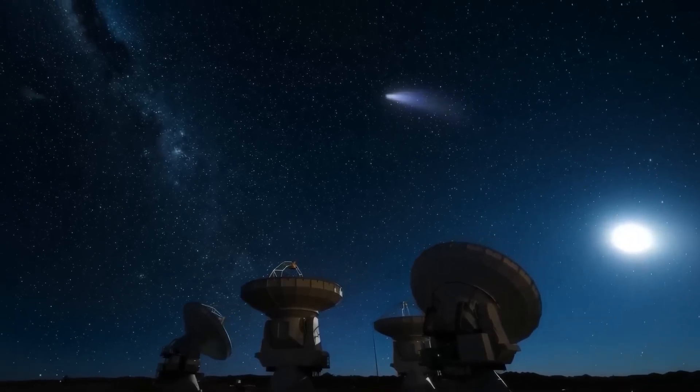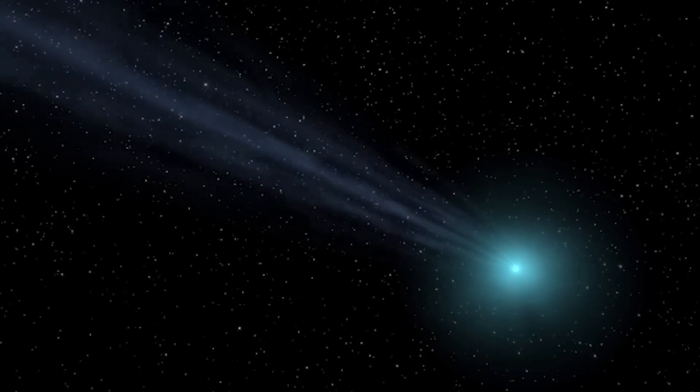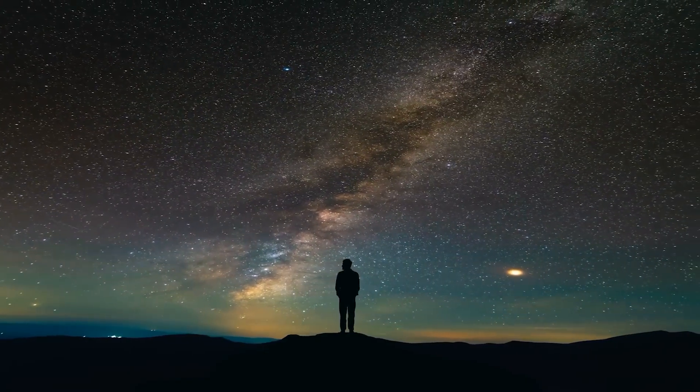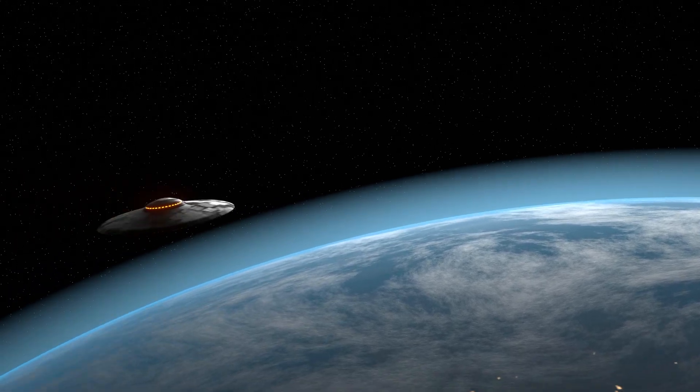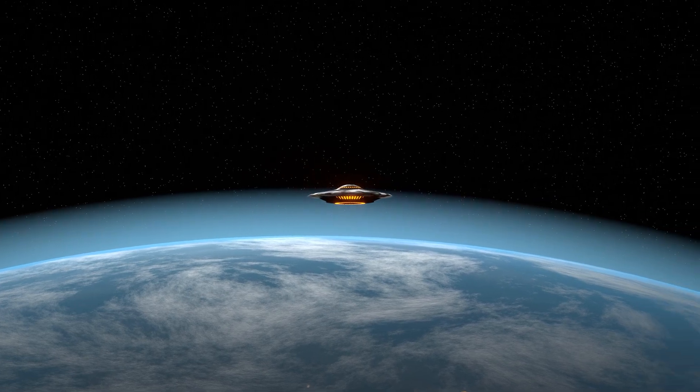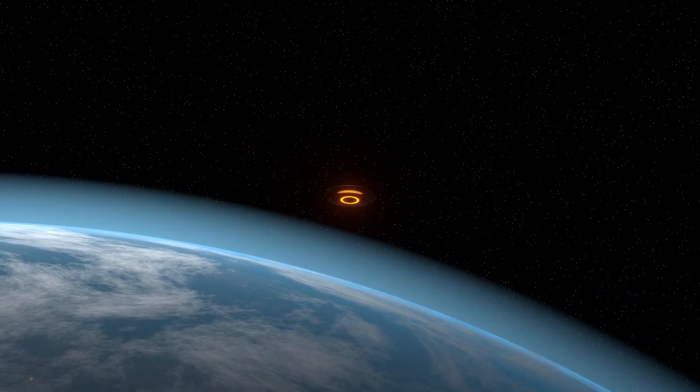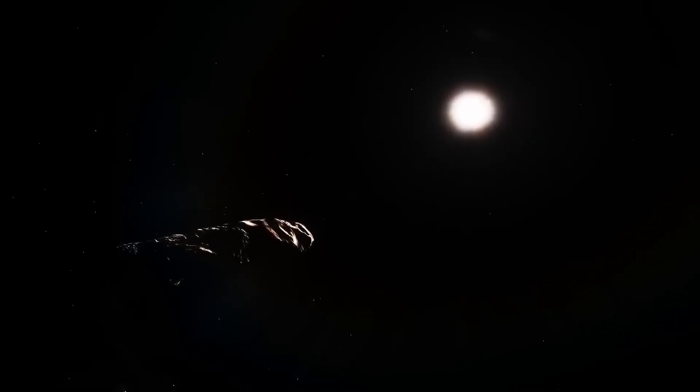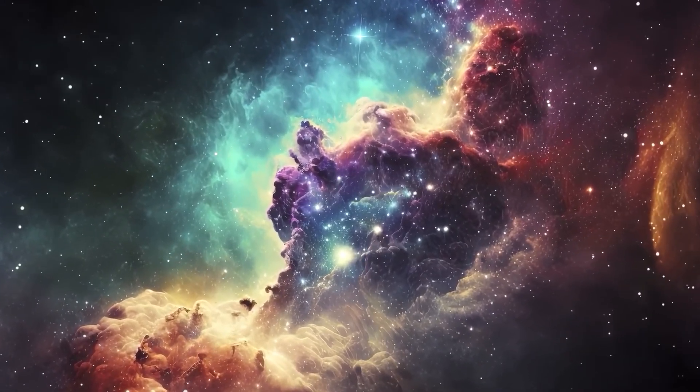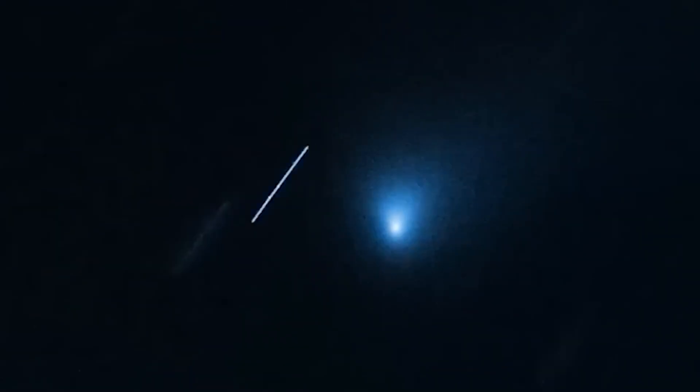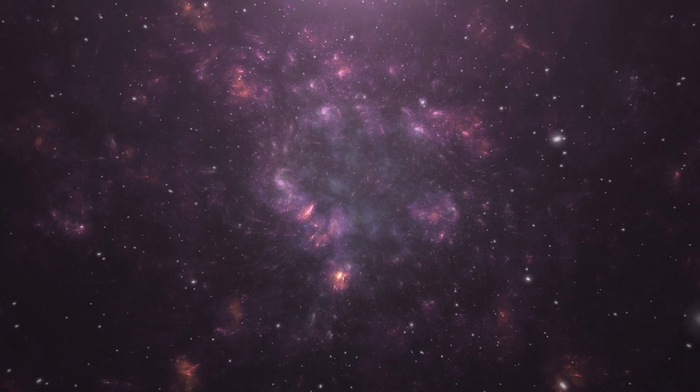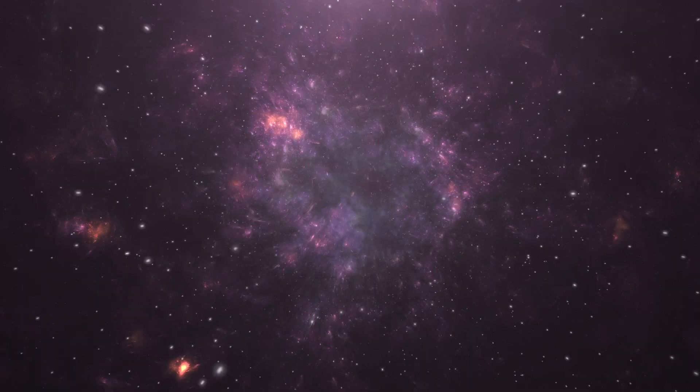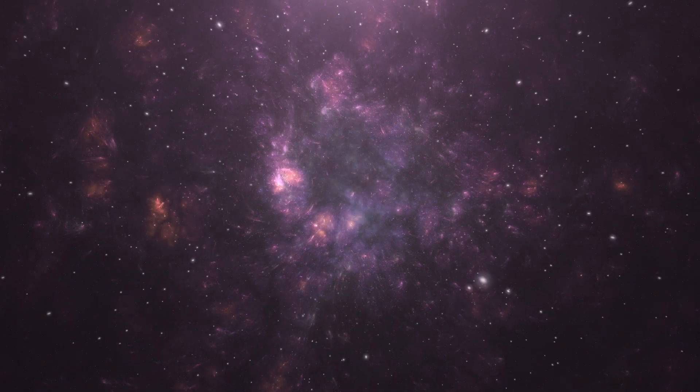So where does that leave us? Staring into the void, hoping it blinks first. Either 3I Atlas is a completely natural, if bizarre, interstellar comet, teaching us that the universe is even stranger than we thought. Or, it's a piece of technology. A probe. A message in a bottle that's been sailing the cosmic ocean for eons, and it just washed up on our shore. Proof that we are not the only ones who got smart, looked up at the stars, and decided to throw something into the dark to see if it hits anything. The next time you look up at the night sky, remember, something is up there right now, moving with a purpose we don't yet understand. It's a reminder that the cosmos isn't just beautiful and vast, it's also deeply unnervingly mysterious. And honestly, I wouldn't have it any other way.